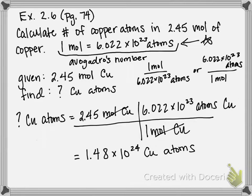So if we do this multiplication, you should get that there are 1.48 times 10 to the 24 copper atoms in 2.45 moles of copper. And that is your final answer.